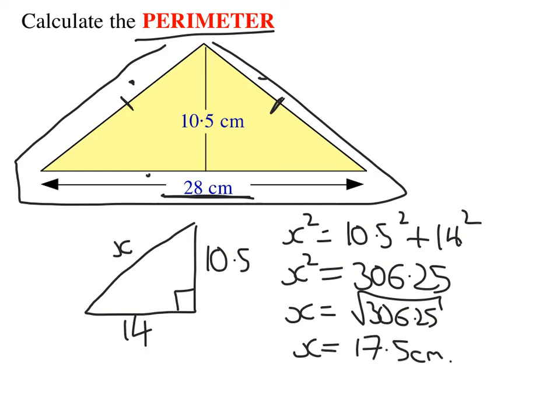Now, that's not the end. I need to work out the perimeter. So the perimeter is the three sides adding up. So I've got two lots of the 17.5, as it's a nice little isosceles triangle, plus a 28. And if I do that, I get 63 centimeters.